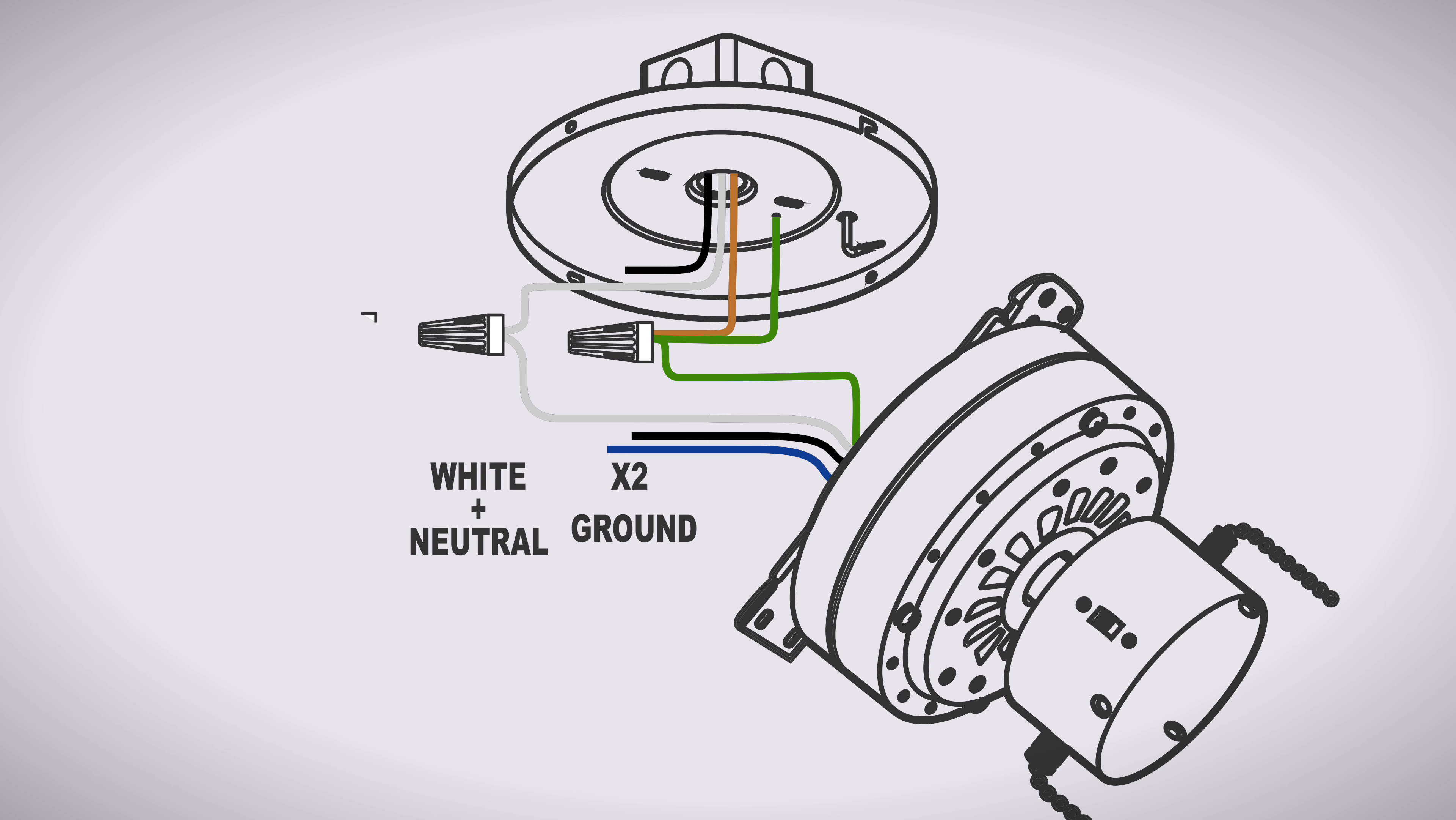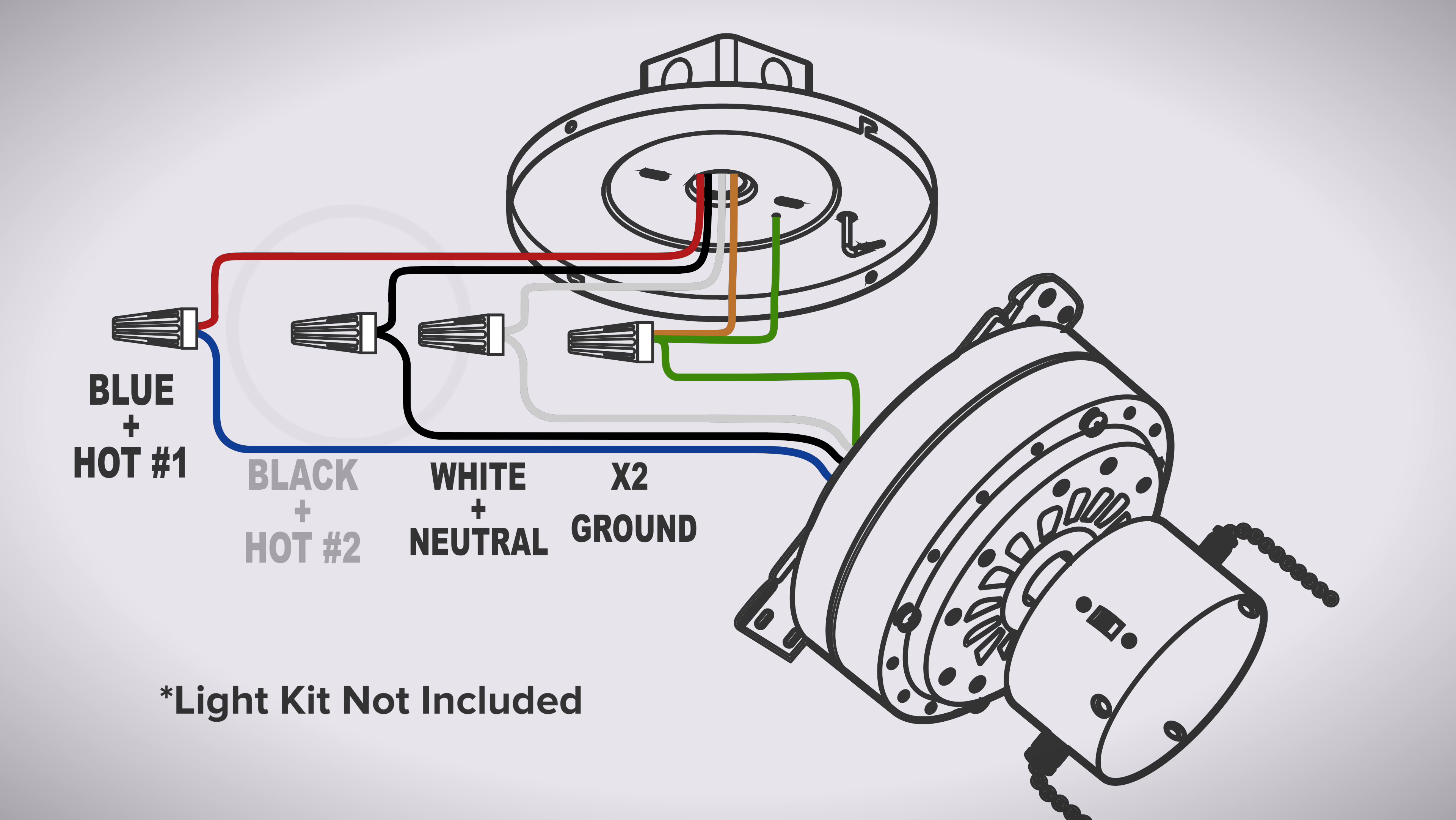If your box has two hot wires to control the fan and light separately, combine one hot wire with the black wire from the fan and the other hot wire with the blue wire from the fan.